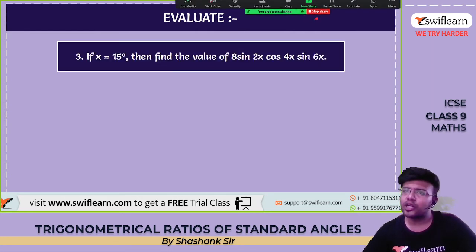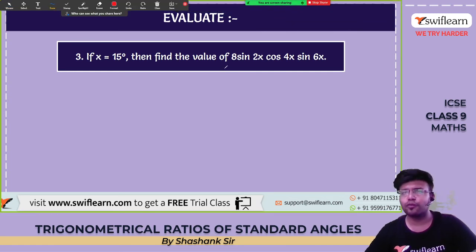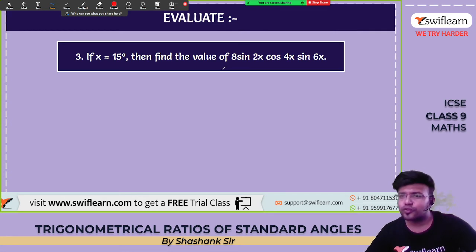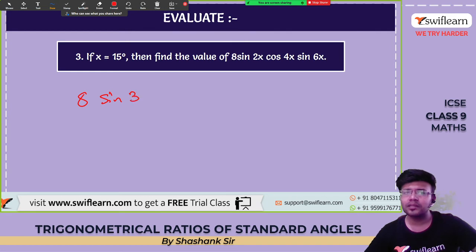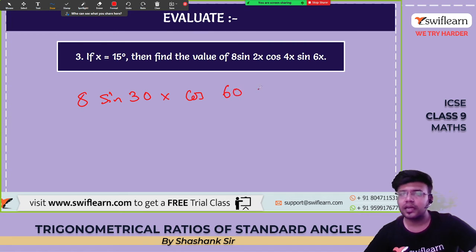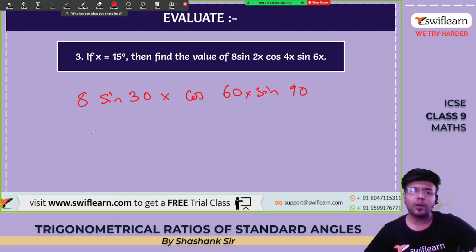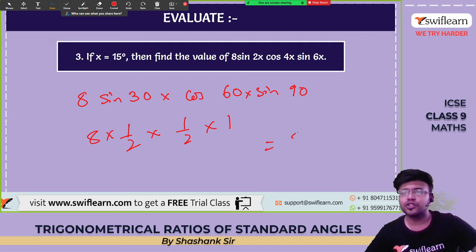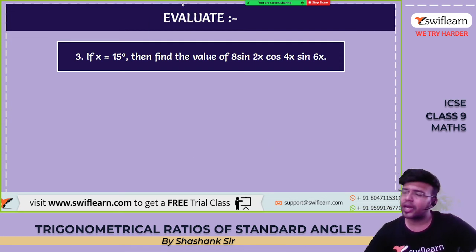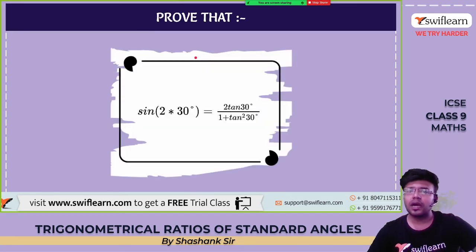If x = 15°, find the value of 8 sin 2x · cos 4x · sin 6x. Substituting x=15: 8 sin 30° · cos 60° · sin 90°. Sin 30°=1/2, cos 60°=1/2, sin 90°=1. So: 8 × 1/2 × 1/2 × 1 = 8/4 = 2. The answer is 2.